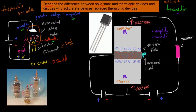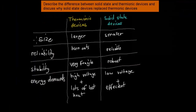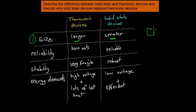The second part of the dot point is to discuss why solid state devices replaced thermionic devices. We used to have thermionic devices and now we have solid state devices, and the reasons are as follows. First, size — thermionic devices are much larger compared to solid state devices, which are much smaller. For example, if you want to make a microchip or microprocessors, we want millions or billions of transistors fitting on a tiny microchip. Small is important, and that's why our computers are so small because of small solid state transistors.